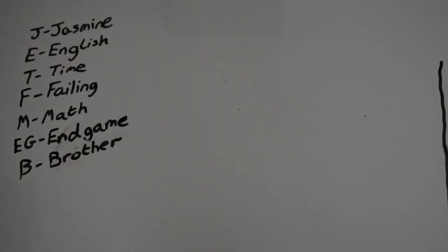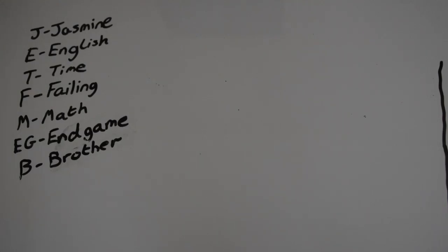I've set up the whiteboard and added a key with the names of the characters in the mind scene: J for Jasmine, E for English, T for Time, F for Failing, M for Math, EG for Endgame, and B for Brother. I'm going to draw out the scene and explain the composition of the shots and how I managed to plan having several different characters all interact with just the one person in a way that makes sense and ensures audiences wouldn't get confused by what's going on.